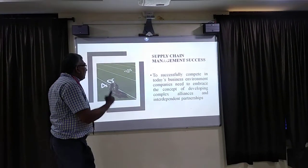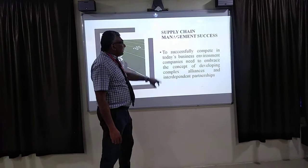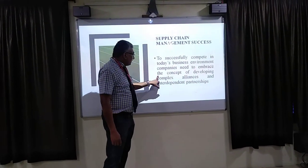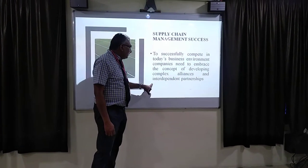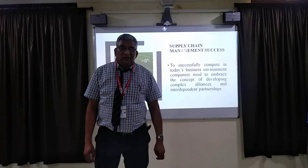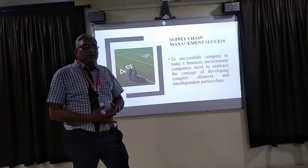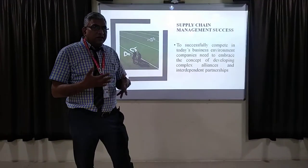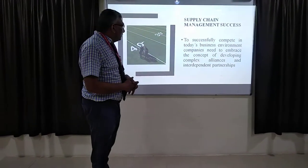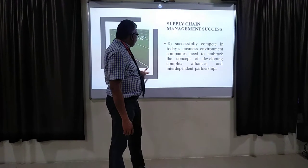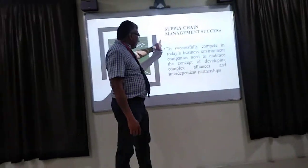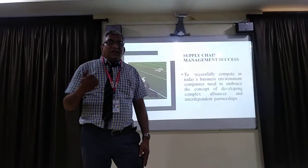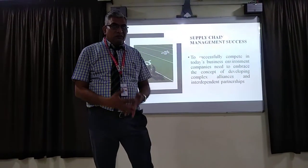Regarding the supply environment: success depends on successfully competing in the business environment. Competition requires addressing the concept of developing complex alliances and interdependent partners. When talking about supply chain management, it involves a partner relationship between the supplier and production, and production with marketing. It is called an interdependent partnership — or an alliance — and the partnership is required from both customers and producers, who have to be aligned properly.